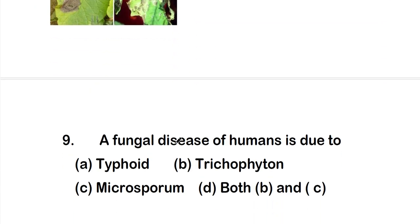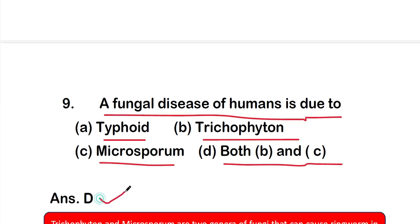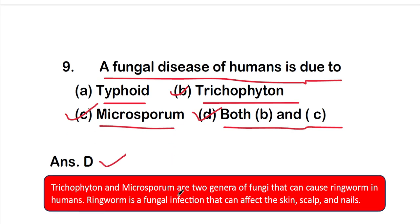Question 9: a fungal disease of humans is due to — option A: Typhoid, option B: Trichophyton, option C: Microsporum, or option D: both B and C. The right answer is option D, both B and C. Fungal diseases of humans are due to both Trichophyton and Microsporum.